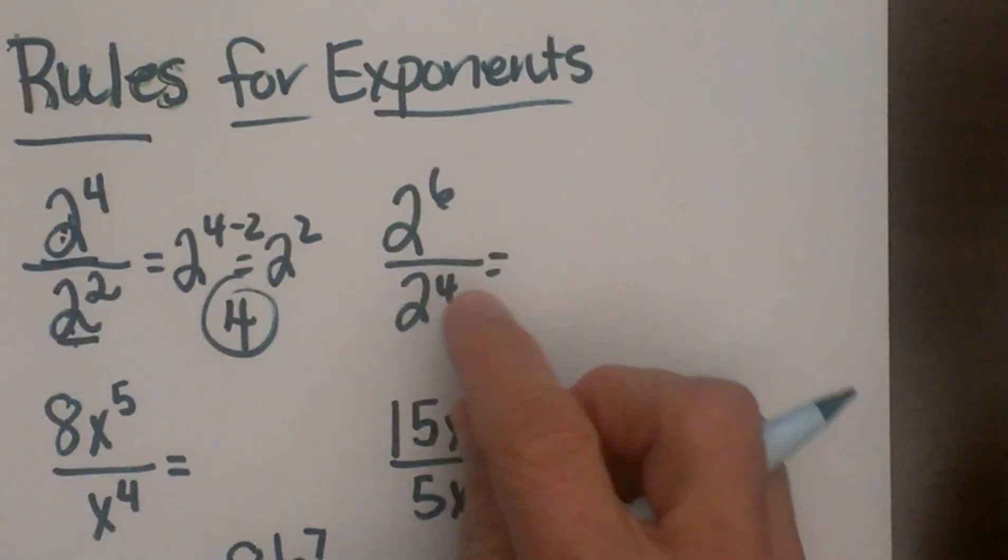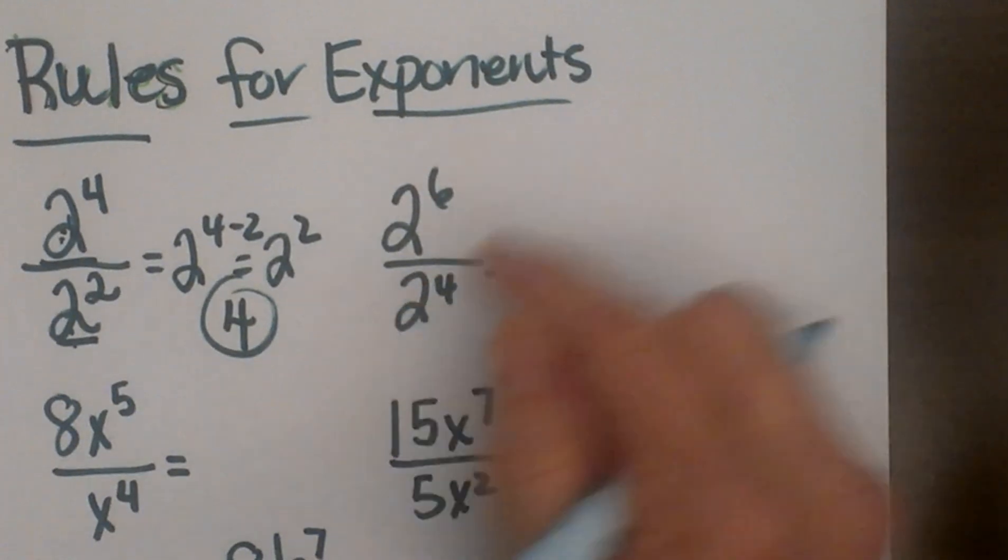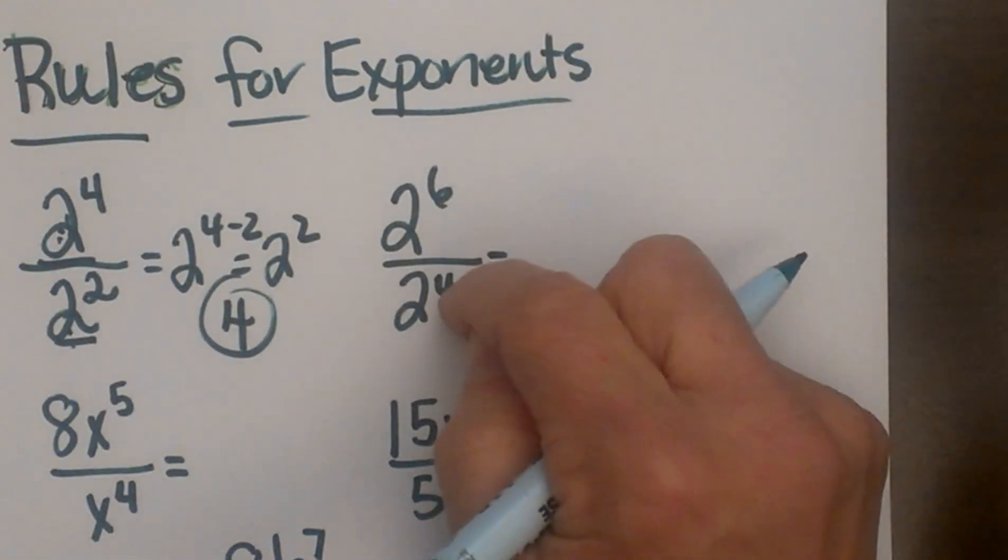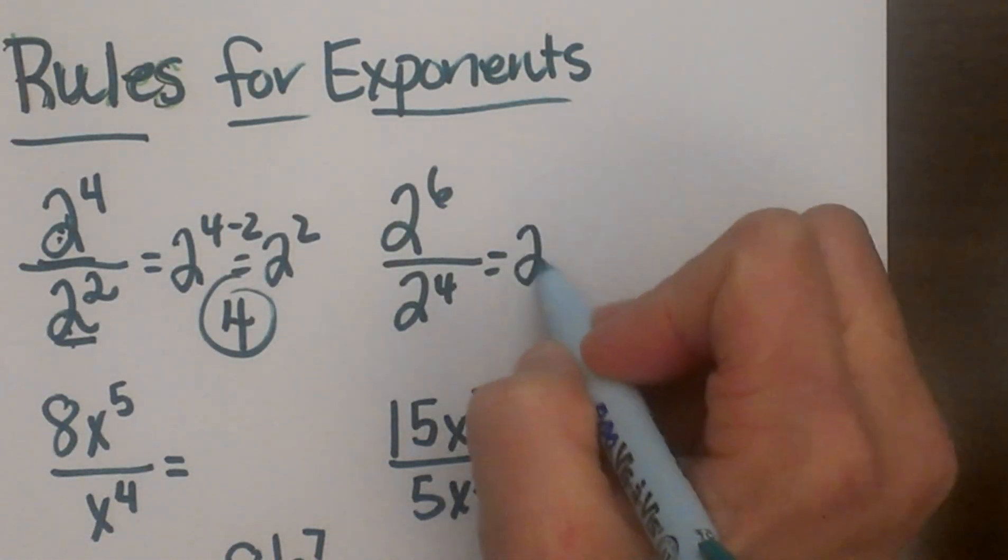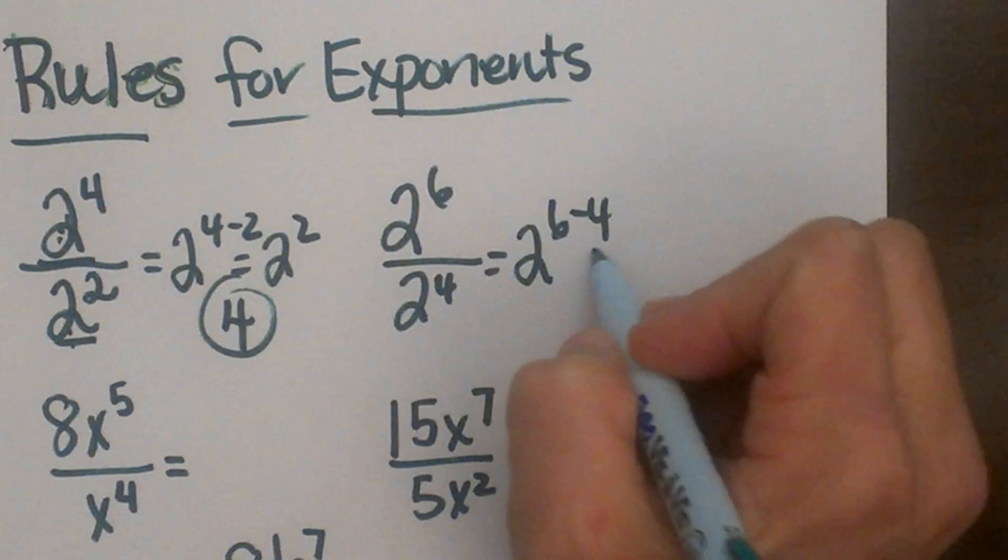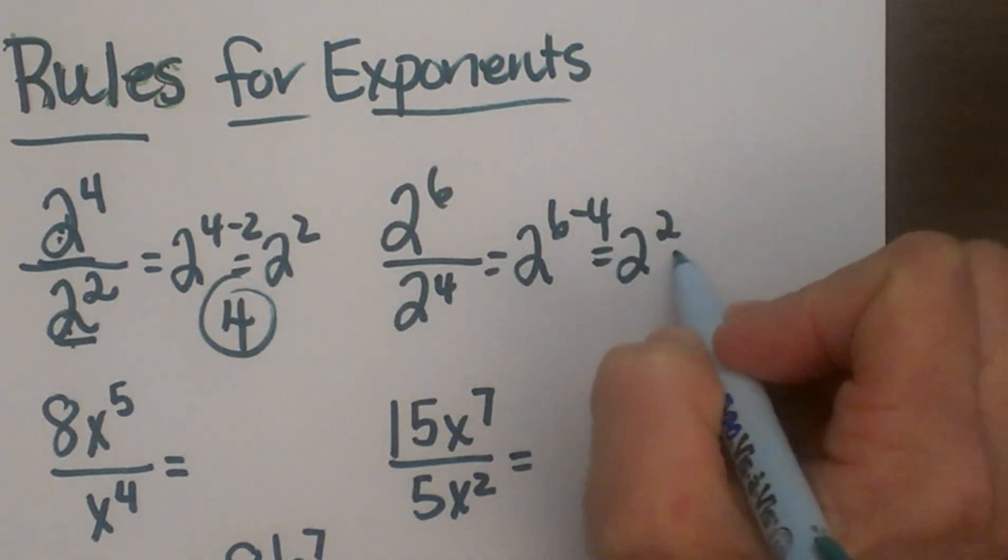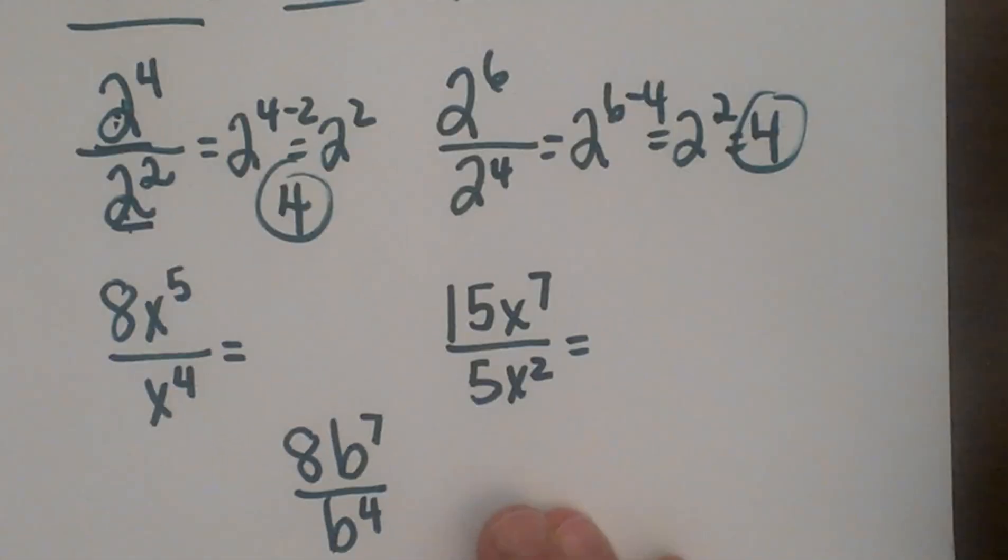Here's another one. We have like bases of 2 again. We have exponents of 6 and 4, so that's going to be 2 to the 6 minus 4, which is 2 squared, also 4. So a couple different ways to get 4.